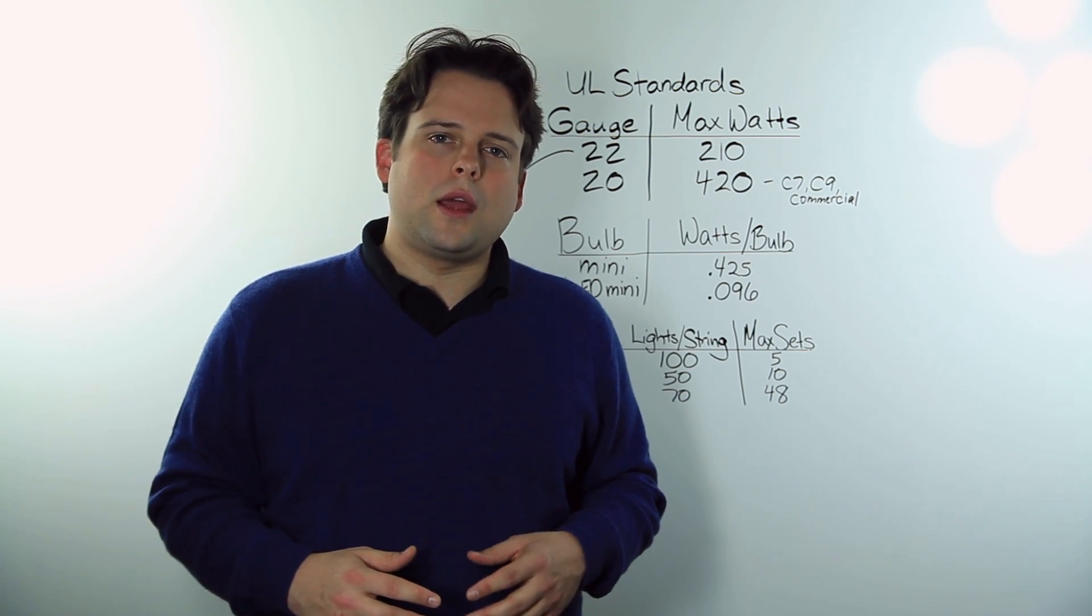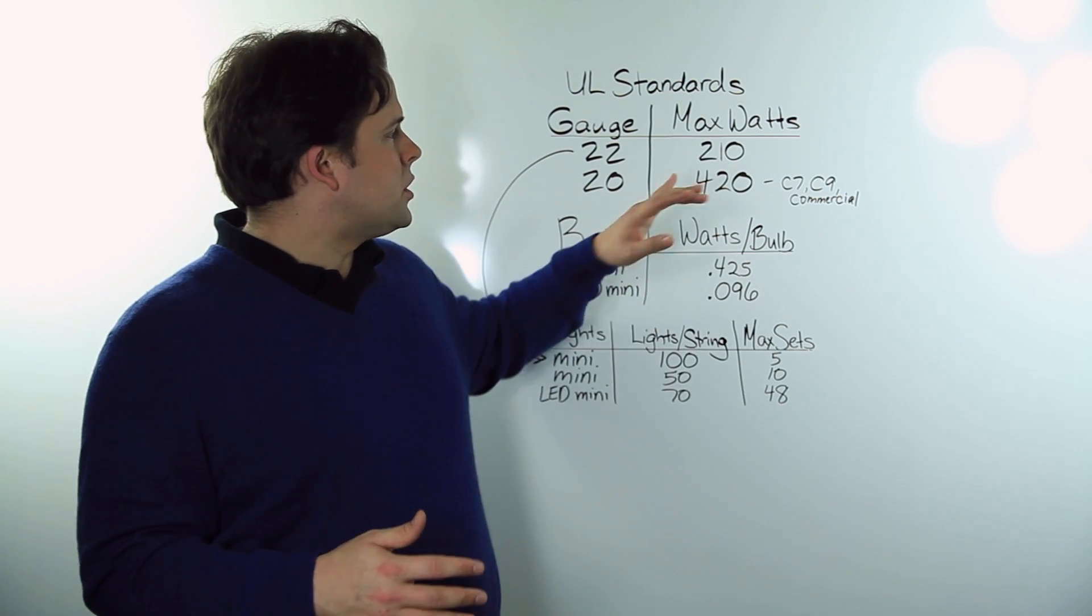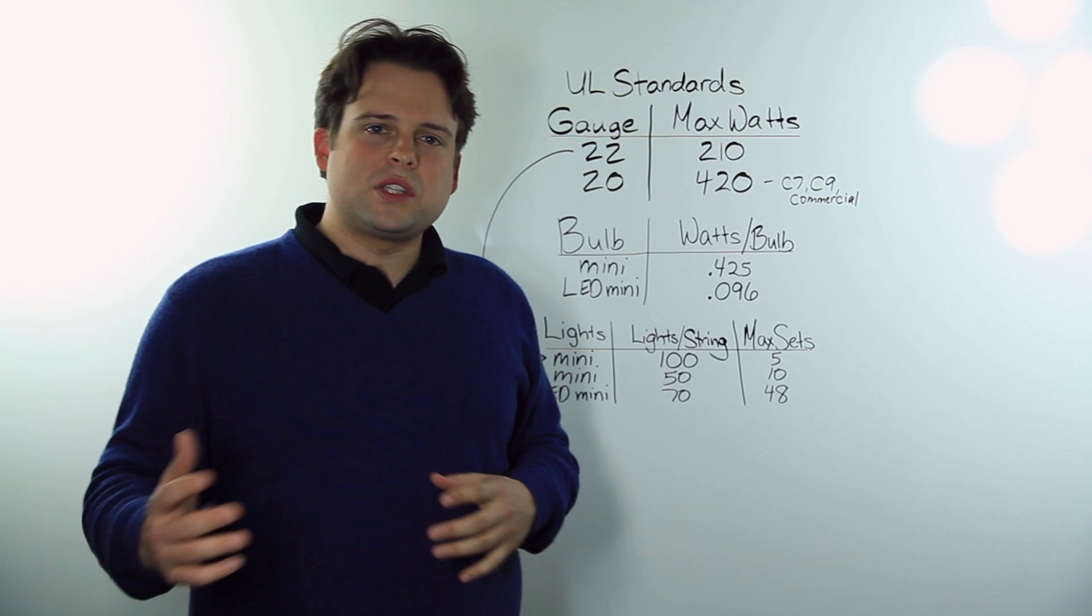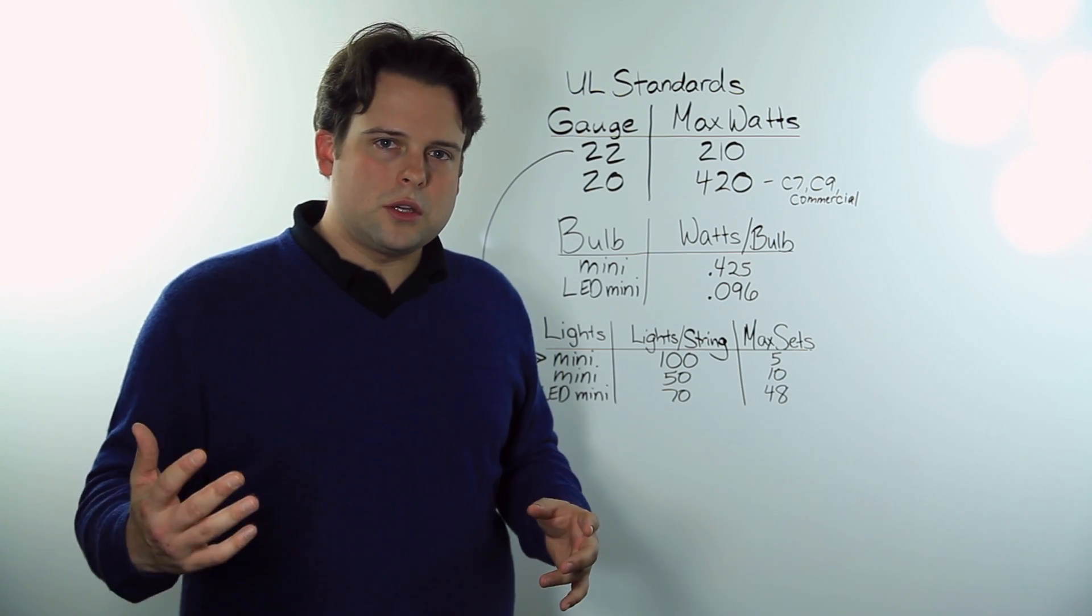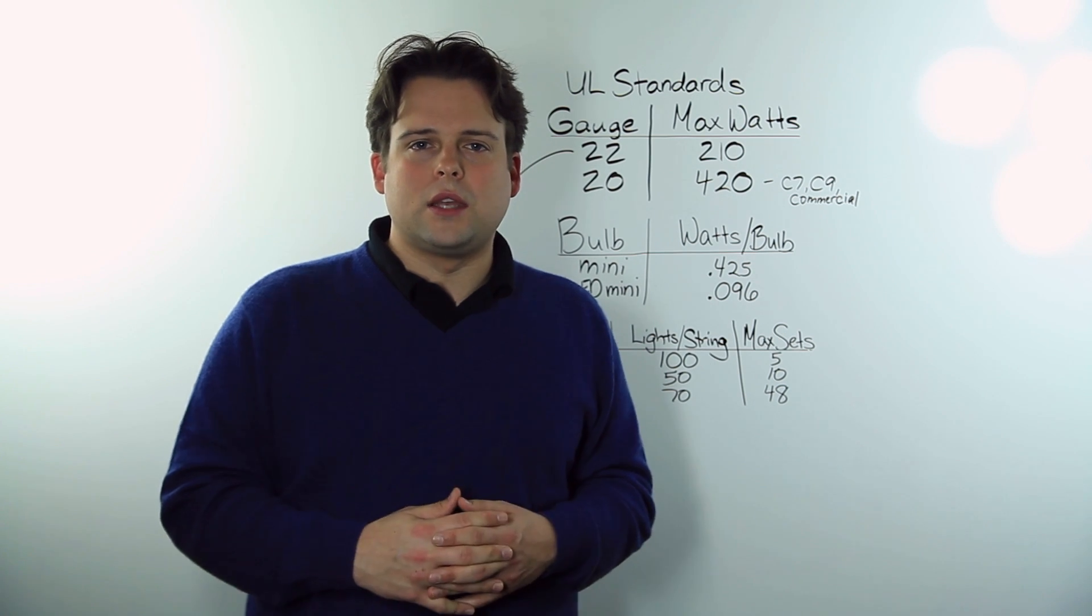You can also connect up to 420 watts on a 20 gauge wire. You will mostly only see this used in commercial mini lights and C7 and C9 incandescent.